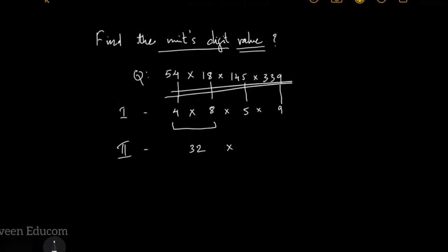The next step is you have to multiply the other two numbers: 5 × 9 is 45.